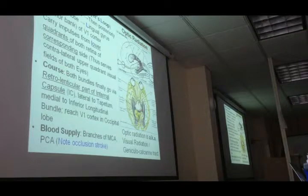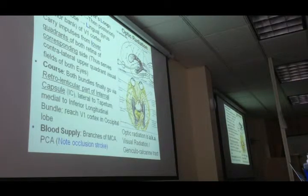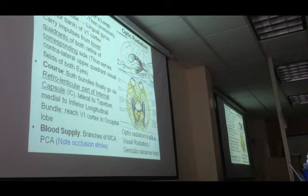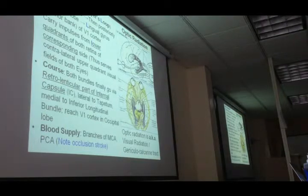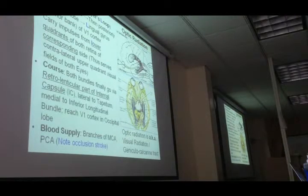The lateral bundle reaches the lingual gyrus. This forward bend into the temporal lobe is called Meyer's loop. Here is a useful mnemonic: the lateral bundle receives fibers from the lower quadrant, forms Meyer's loop, and goes to the lower bank — the lingual gyrus. All L, L, L, L.